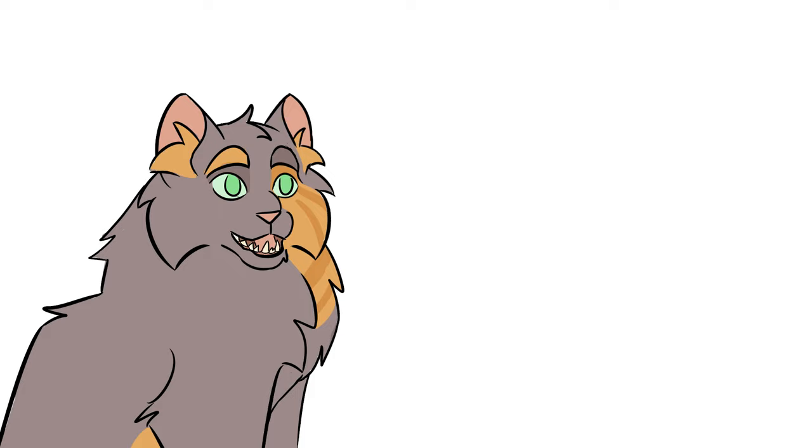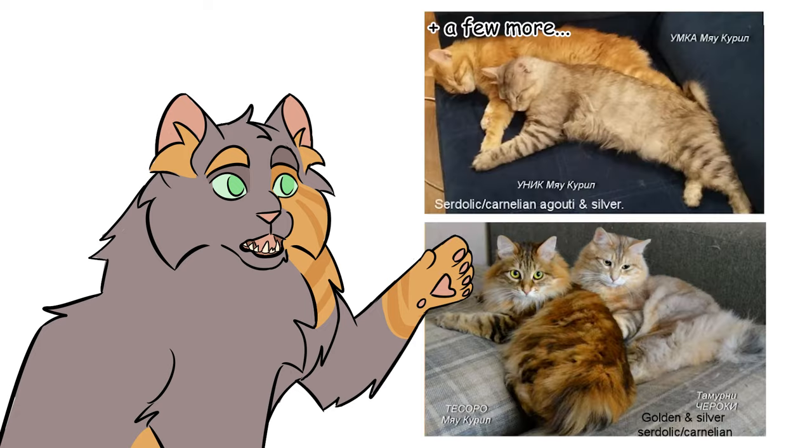Carnelian seems to interact in unique ways with agouti inhibitor and widebanding, but I couldn't find phenotypes for every interaction between all four genes. All I could find was these pictures from Messy Beast and their captions. The source and the full article that goes with it are linked in the description.